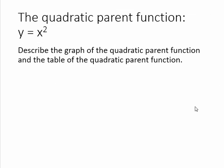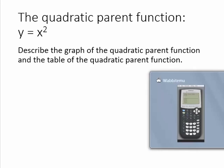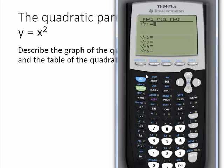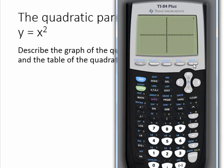We're going to describe a graph of the quadratic parent function by using our graphing calculators. So we get our graphing calculators on, we hit the y equals button in the upper left hand corner, and we'll type in x, then the exponent button above your divide by button, and then 2. So now we have the equation y is equal to x to the second power, which is the quadratic parent function. And when we hit the graph button, it graphs the function for us.